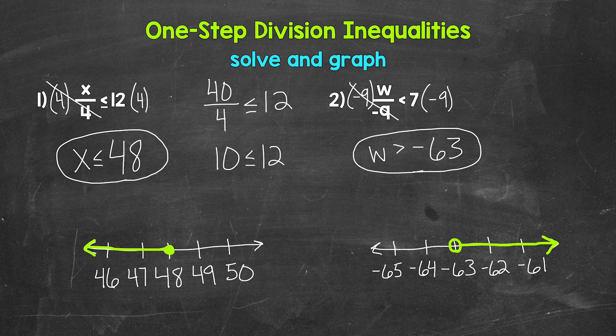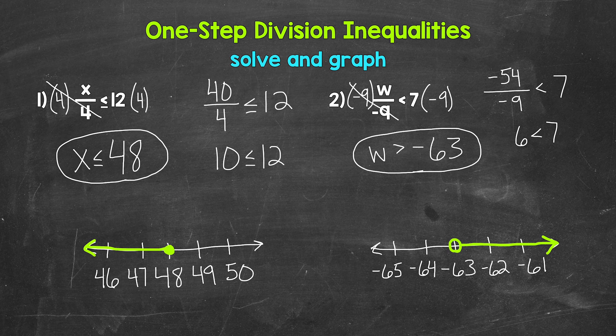Lastly, let's wrap this up by checking a solution. We can use anything greater than negative 63 — let's use negative 54 and plug that in for W. That will work nicely with that negative 9 since we are dividing. So negative 54 divided by negative 9 is less than 7. Negative 54 divided by negative 9 gives us 6, and 6 is less than 7 — so we are correct. Our answer: W is greater than negative 63.